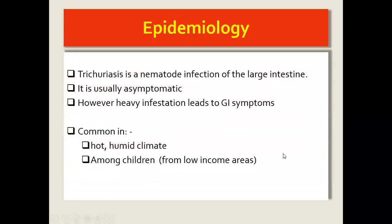The epidemiology: tricuriasis is a nematode, one of the roundworms, and it normally likes the large intestines — that's where the infestation happens. It's usually asymptomatic, but it becomes a problem when we have heavy infestation and we start having gastrointestinal symptoms.